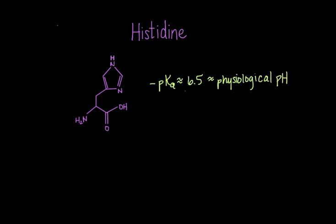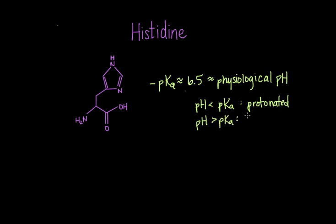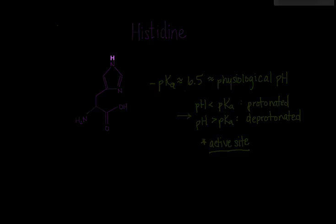What does it mean to have a pKa close to physiological pH? At a pH below an amino acid's pKa, the amino acid will exist in a protonated or positively charged form. At a pH above its pKa, it will exist in deprotonated form. Since physiological pH — the pH of the fluid within our own bodies — is roughly equal to the pKa of histidine, histidine will exist in both protonated and deprotonated forms. This makes it a particularly useful amino acid at the active site of a protein, where it can both stabilize or destabilize the substrate.